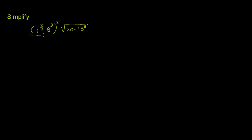So first we can look at this first expression where we're taking this product to the second power. We know that instead we can take each of the terms in the product to the second power and then take the product. So this is going to be the same thing as r to the 2/3 squared times s to the 3rd squared.